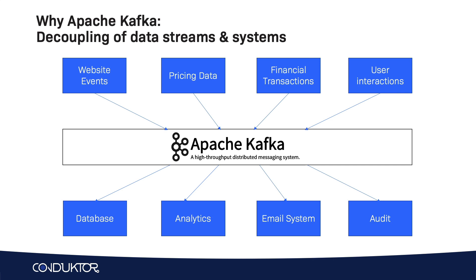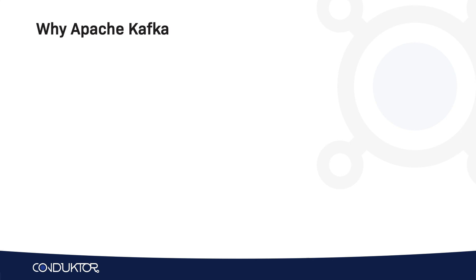So what could be the source systems and the target systems? Well, for example, your source systems could be website events, pricing data, financial transactions, or user interactions. And then the target systems may be databases, analytics systems, email systems, or audit systems — these kinds of things.